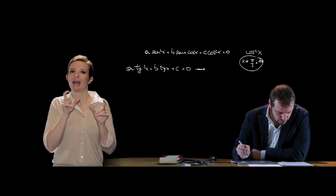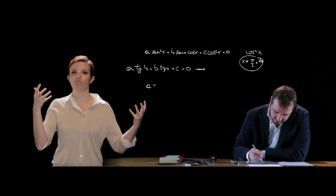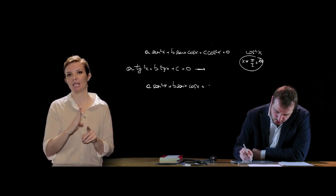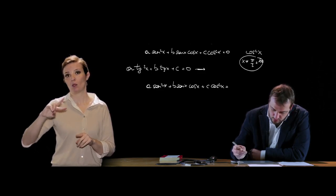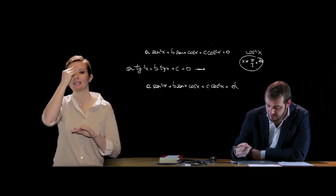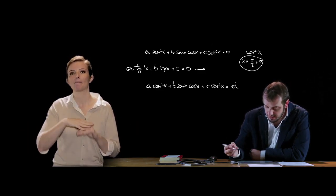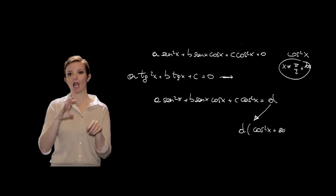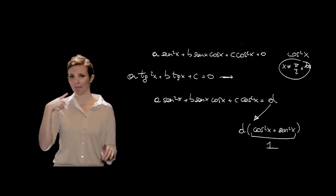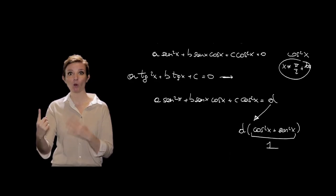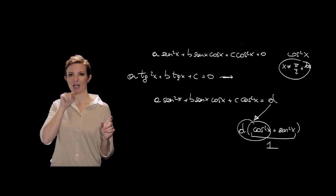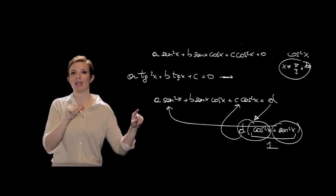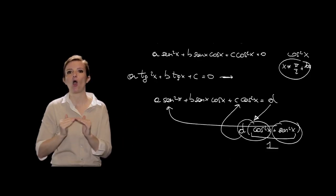Ci sono poi le equazioni riducibili a omogenee, del tipo a·sen²x + b·sen x·cos x + c·cos²x = d. Si sostituisce d con d·(cos²x + sen²x), così si elimina il termine noto e si aggiungono d·cos²x e d·sen²x agli altri termini, riconducendo l'equazione a una forma omogenea.